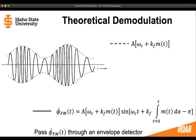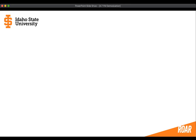If we pass the derivative of the frequency modulated signal through an envelope detector, we'll be very close to recovering the original message — it will just be a matter of slightly adjusting amplitudes or removing some terms at the very end. That's how you apply the theoretical demodulation to get the original message of a frequency modulated signal.